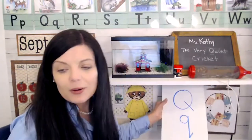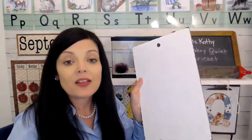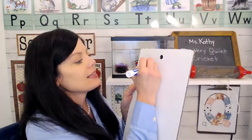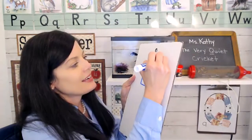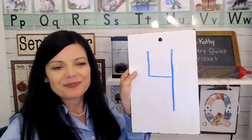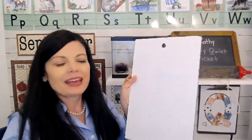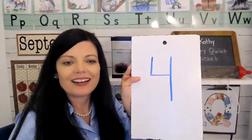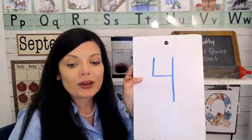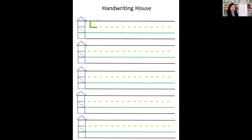Okay, and now on to math. For math today we're going to be working on the number four. We worked on number four already this week, but let's do it again. To write it, make an L and then a number one right beside it — that's the number four. On the handwriting house, the L is going to be upstairs, and then the number one is going to be upstairs and downstairs. So: L upstairs and then a one right beside it.